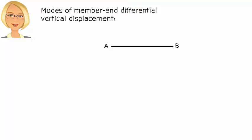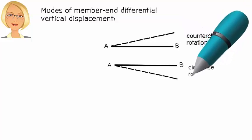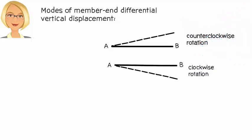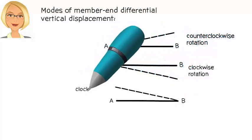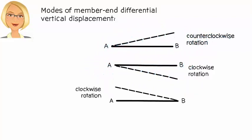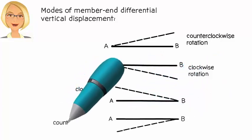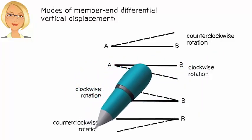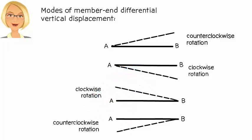Here is our beam segment. Its ends are labeled A and B. What happens to the shape of the segment when one of the ends moves up or down in relation to the other end? One of four scenarios would result. If B moves up, we get this configuration resembling a counterclockwise rotation of the member. If B moves down, we end up with this configuration which involves a clockwise member rotation. Further, an upward movement of A is equivalent to a clockwise rotation of the member. And a downward movement of A corresponds to the member's counterclockwise rotation. So, when the beam segment experiences a differential end displacement, member and, by extension, joint rotations result.